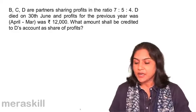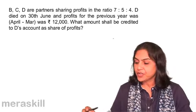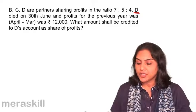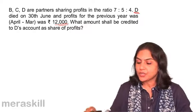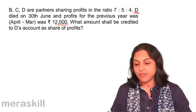B, C, D are partners sharing profits in the ratio 7:5:4. D died on 30th June and profits for the previous year April to March was 12,000. What amount shall be credited to D's account as share of profits?